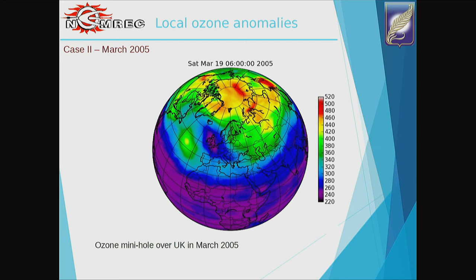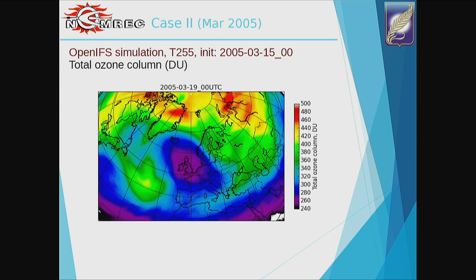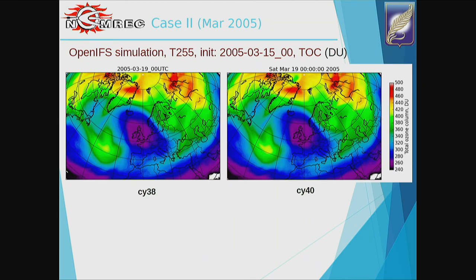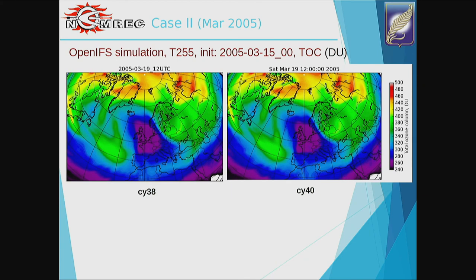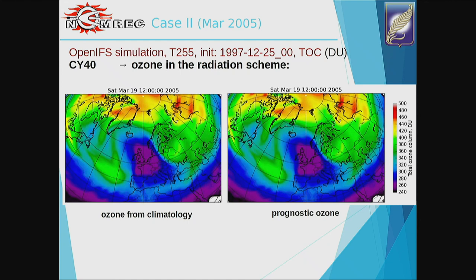Another case is a local ozone anomaly over the UK and other parts of Europe in March 2005 — an example of a springtime anomaly. This one got simulated well compared to the previous case, possibly due to better representation of ozone in the initial data for those years. We can see it developing in the reanalysis, with the minimum exactly above the UK. There is some difference between the model cycles, but it is reproduced well in both. Both with climatological and prognostic ozone, the result is almost the same, and it is much more similar to the analysis than the 1997–1998 case.